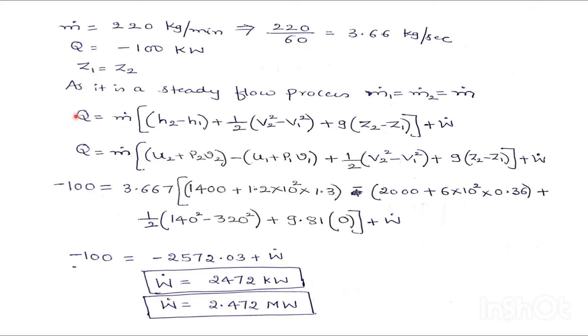So as per steady flow process, M1 dot will be equal to M2 dot will be equal to M only. So let me write the equation, steady flow energy equation first. Already he has told in the problem, potential energy is neglected.